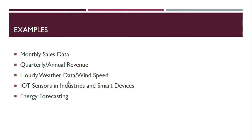Some examples of time series data include monthly sales data if you're running an organization, or quarterly and annual revenue published by listed companies. There's hourly weather data such as wind speed, IoT sensors installed in industrial devices that continuously generate data, and smart devices like cars that generate data continuously and send it to a centralized location. Energy forecasting is another use case where you want to understand user demand for electricity to manage production or sell in an open market.